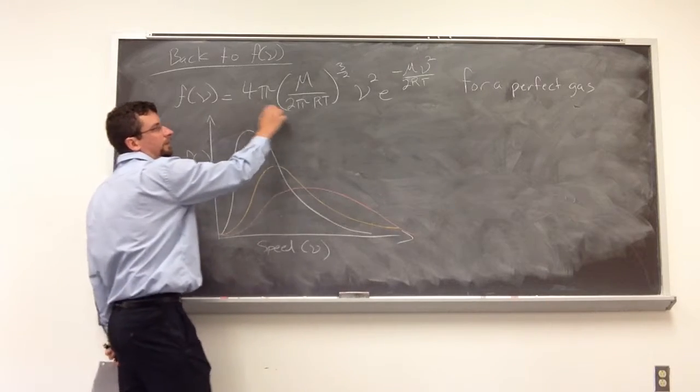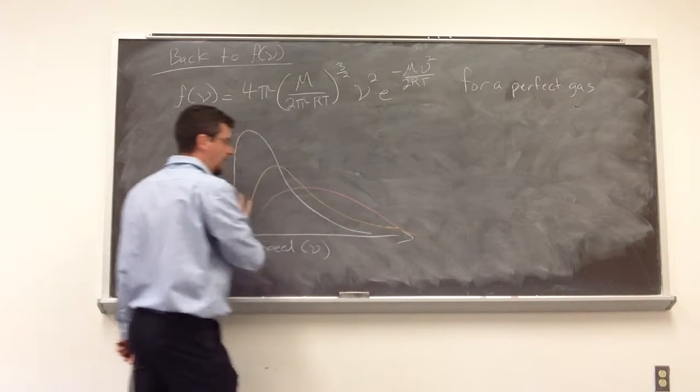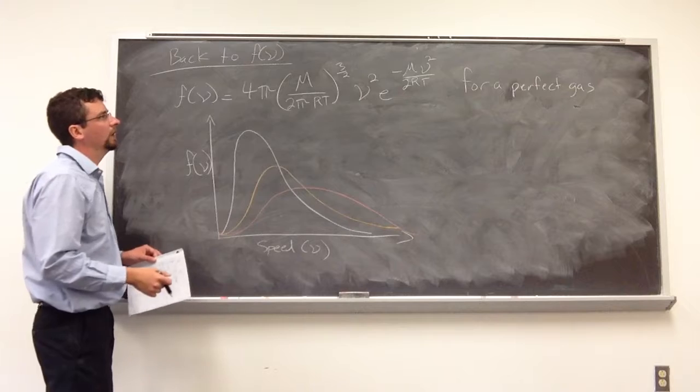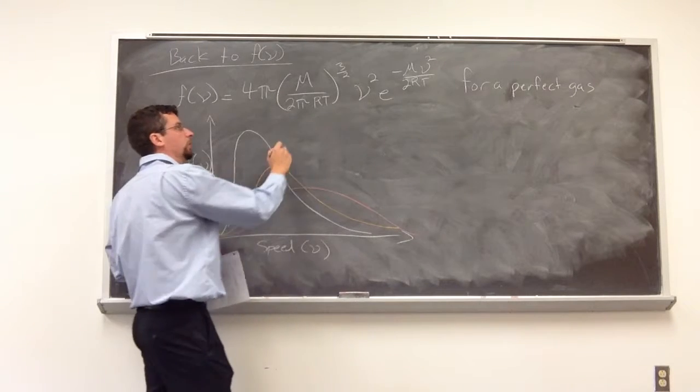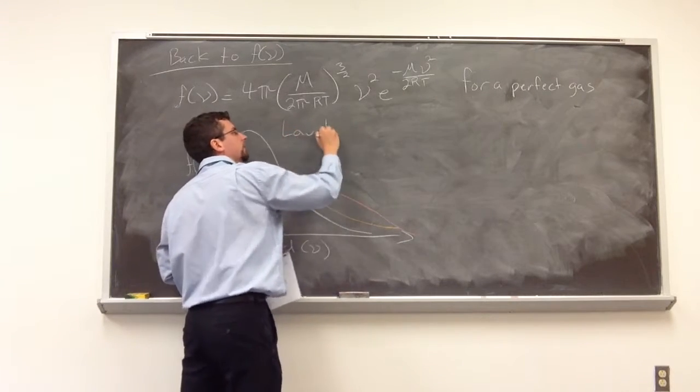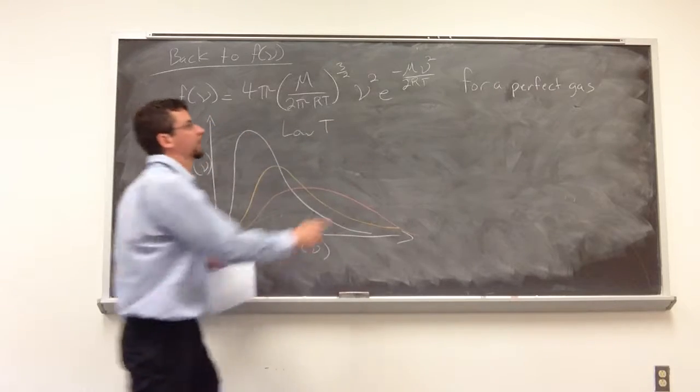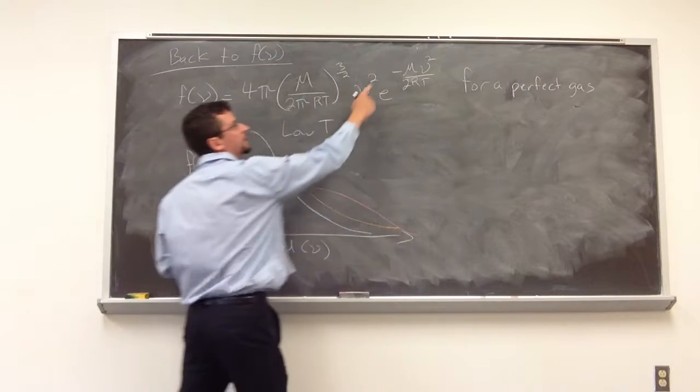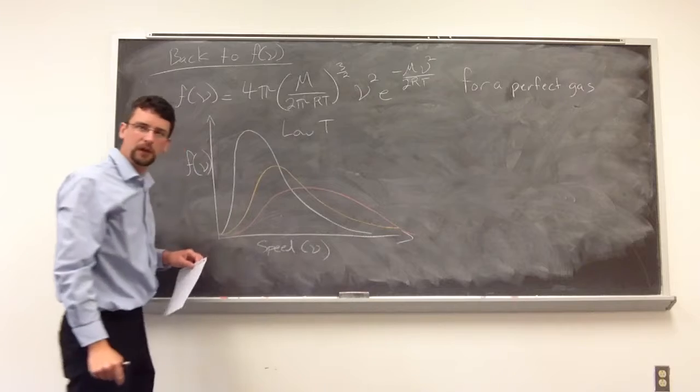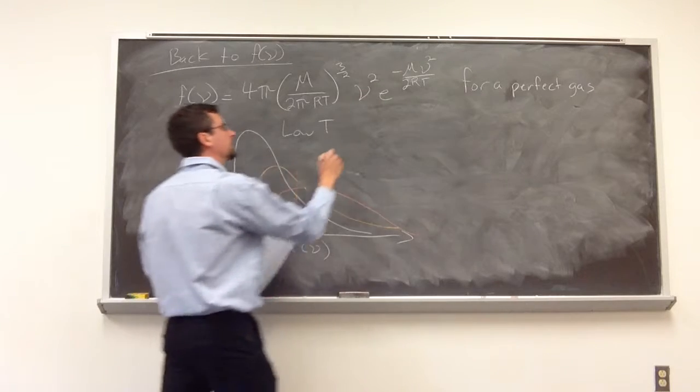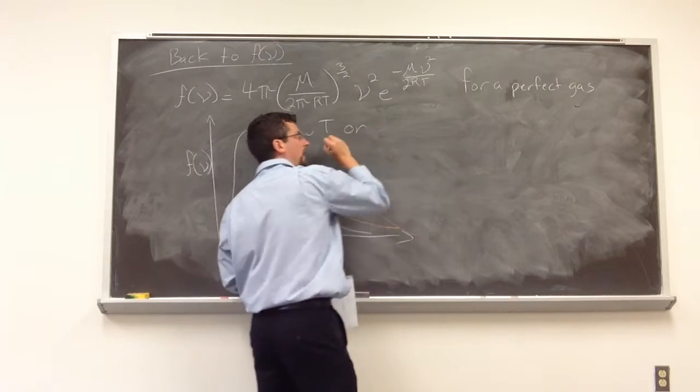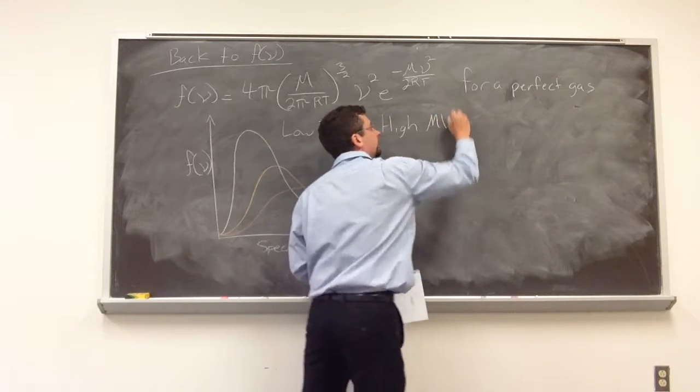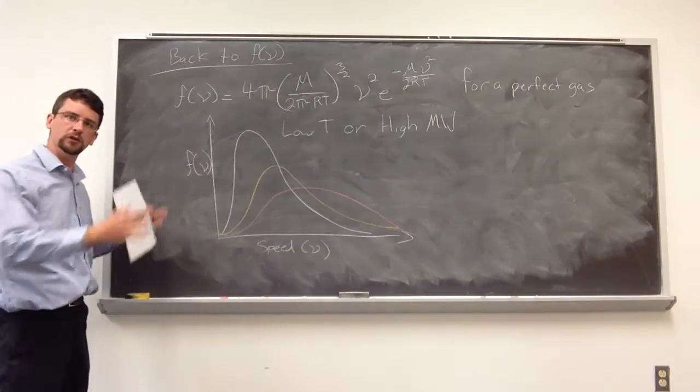So keeping this in mind, what's important is this function over here, how does that change this distribution? What would need to happen for this to work out this way? Well, we would need a low temperature. But since we have a negative value here, if we increase the high molecular weight system, then we should pull in more. So a low T or a high molecular weight will make our distribution more narrow.